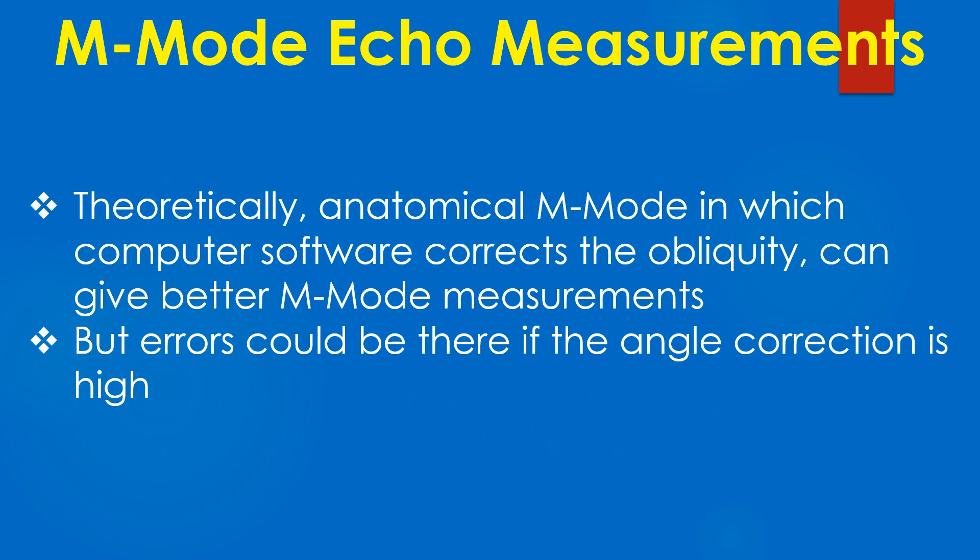Theoretically, anatomical M-mode in which computer software corrects the obliquity can give better M-mode measurements. But errors could be present if the angle correction is high.